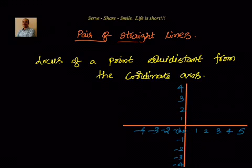Now what's the meaning of a point equidistant from coordinate axes? What are coordinate axes? Nothing but two straight lines, right? So x-axis is given by y equal to 0 and y-axis is given by x equal to 0.